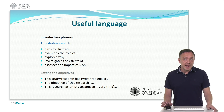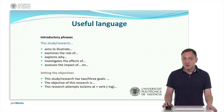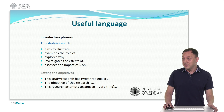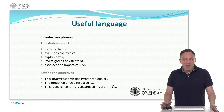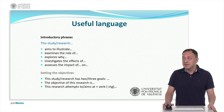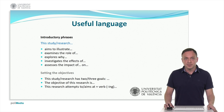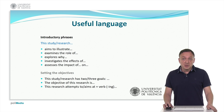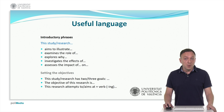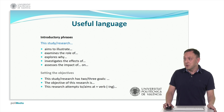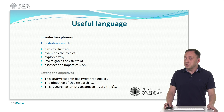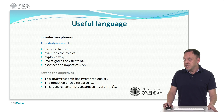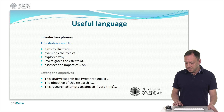Let's see now some useful language that you can use to write your abstract. For the introduction, you can use sentences like: 'this study or research aims to illustrate,' or 'examines the role of,' or 'explores why,' 'investigates the effects of,' or 'assesses the impact of something on something else.' As part of the introduction, you should also write the objective of your work, using phrases like 'this study has two or three goals,' or 'the objective of this study or research is,' or 'this research attempts to' or 'aims at' plus verb in the -ing form.